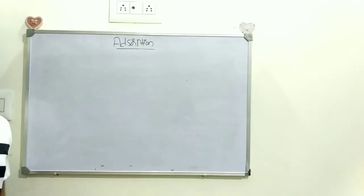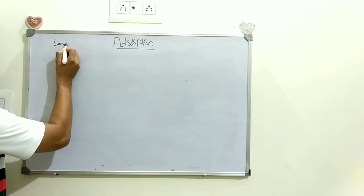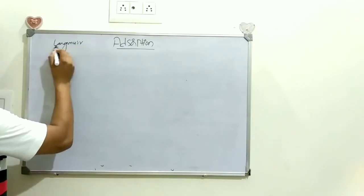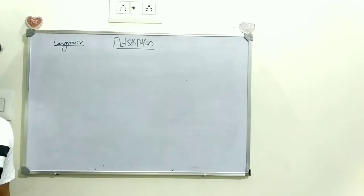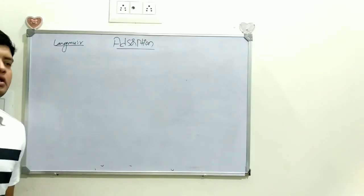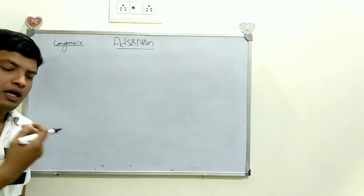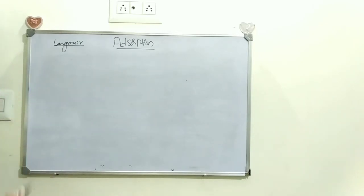Now we will see about Langmuir derivation. Before deriving the Langmuir equation, Langmuir has made some assumptions. Depending upon those assumptions, the derivation is easy. We will see what those assumptions are.